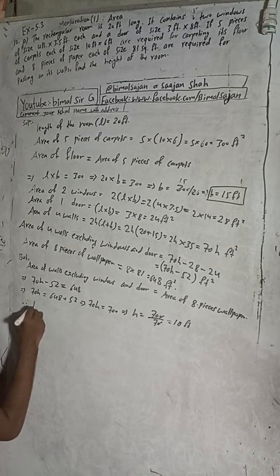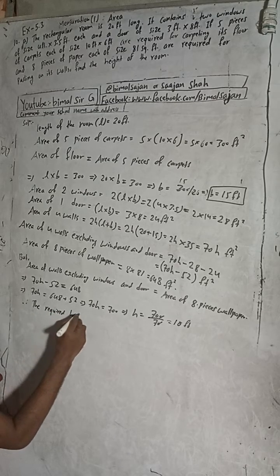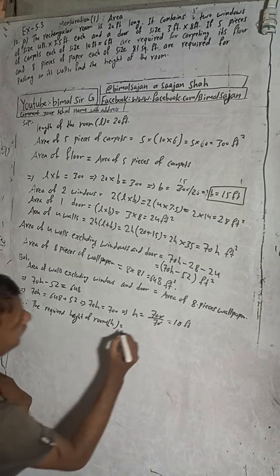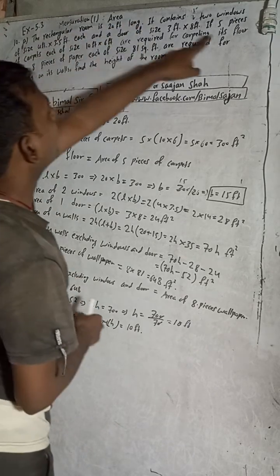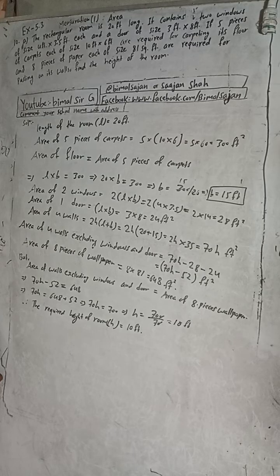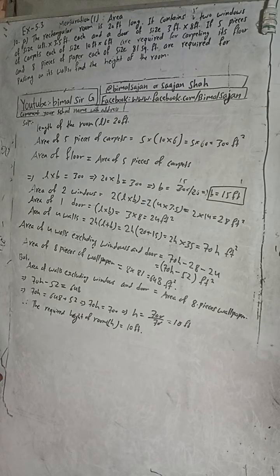Therefore the height of the room h is equal to 10 feet. That is the complete solution. The answer is confirmed as 10 feet. If you found this video useful, please support me with your sweet comments and likes.